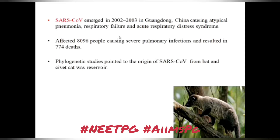SARS coronavirus emerged in 2002 to 2003 in Guangdong, China — this region is very important for your PG entrance examination. It caused atypical pneumonia, respiratory failure, and acute respiratory distress syndrome, affecting around 8,096 people and resulting in 774 deaths. Phylogenetic studies pointed to its origin from bats with the civet cat as a reservoir host.